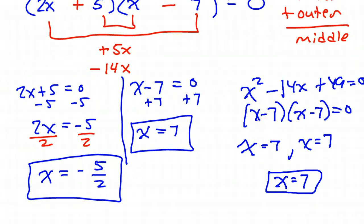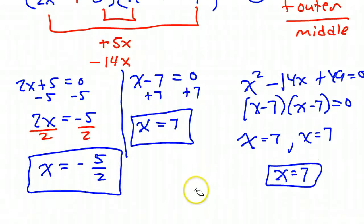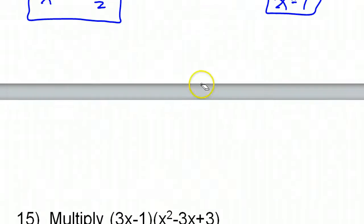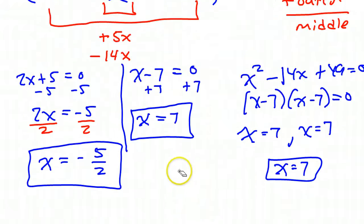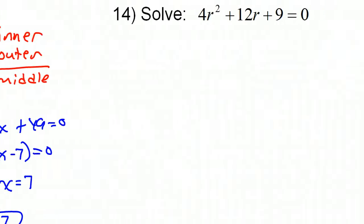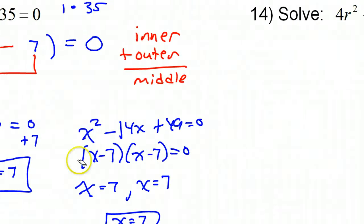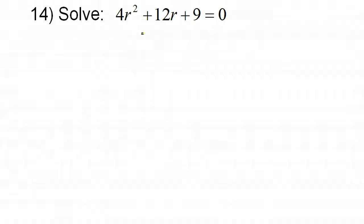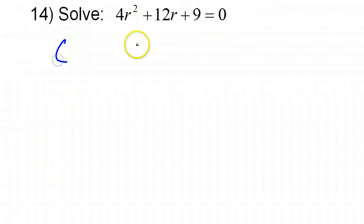So counting repeated solutions separately, the degree will always tell you how many solutions you have. If you have a cubic, you'll have 3 solutions, etc. That's just a little bit of where we're headed. Now let's get on to number 14. Similarly on number 14, first ask yourself: is there a common factor? No, there's not. So let's go ahead and factor this as a binomial times a binomial.